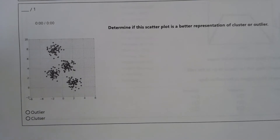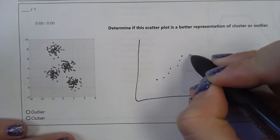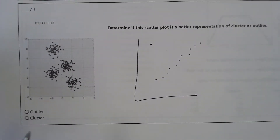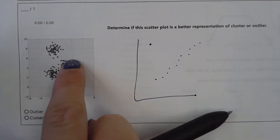An outlier is when there's a bunch of points in a line-ish pattern and then one or more points that are not close to the line. But if you look here, there are really no outliers — they're all bunched up in different areas. So this one would be a cluster, because they are all clustered together in these little groups with no obvious outlier.